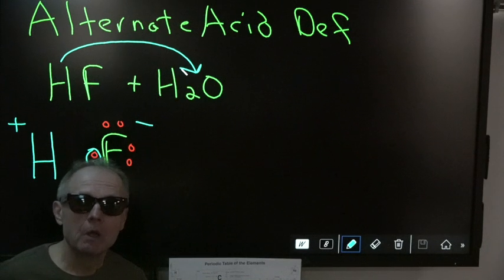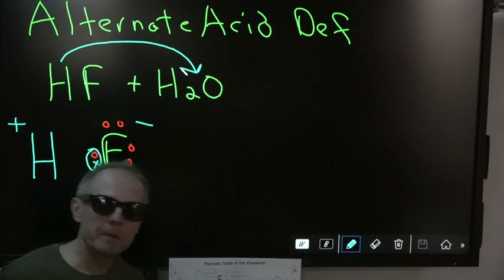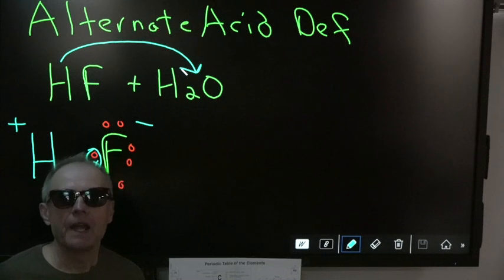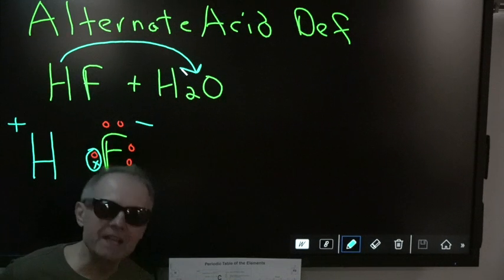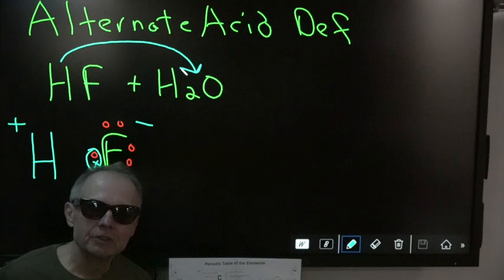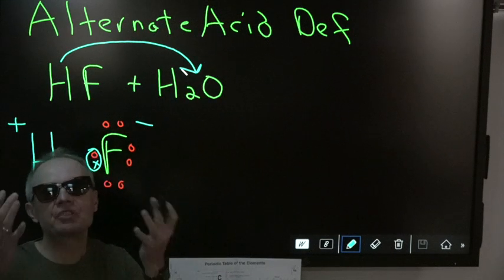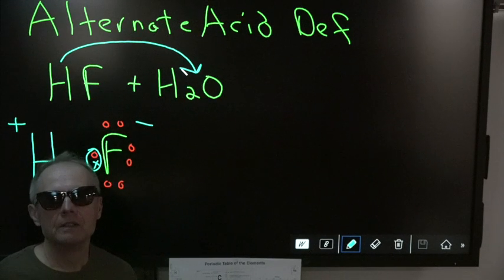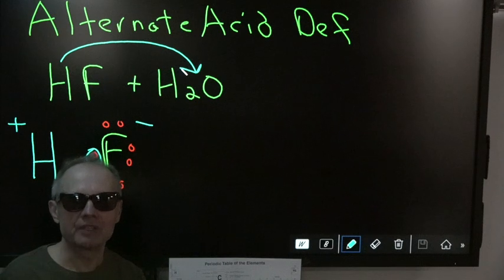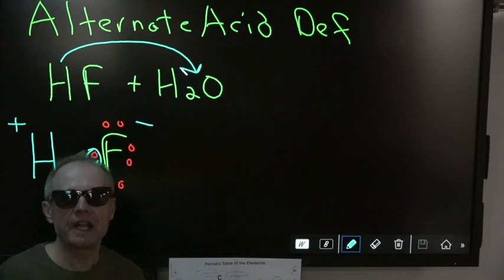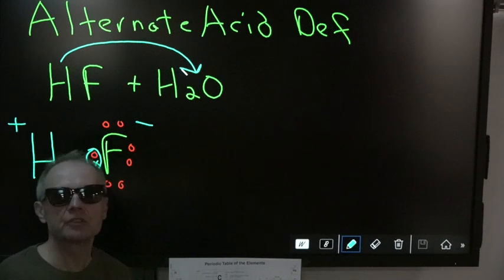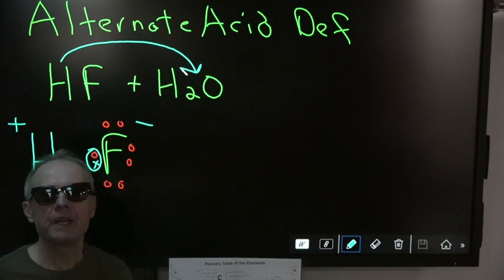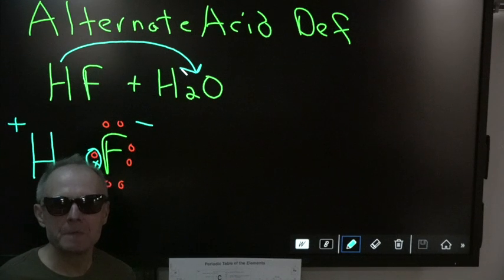Take a wild guess what the definition of an alternate base is: an alternate base accepts the bare proton. So we have two perfectly opposite things — the alternate acid donates the H plus, and the alternate base accepts the H plus.